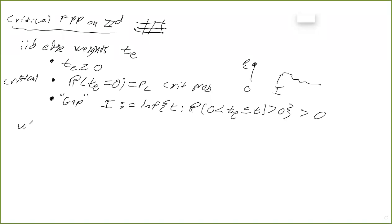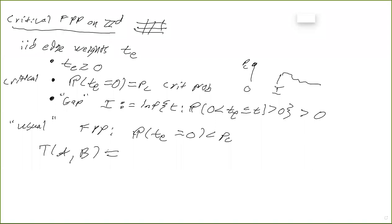Just a brief nod to the usual model: in typical FPP you normally don't have this second assumption. Typically you take the probability of having zero weight to be small. To finish defining the model: given any subsets of the lattice, we define the passage time T_{AB} between sets A and B to be the infimum over all lattice paths gamma from A to B of the sum of the edge weights in gamma. Given our realization of the environment, this defines a pseudometric.